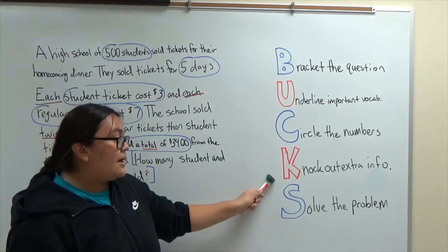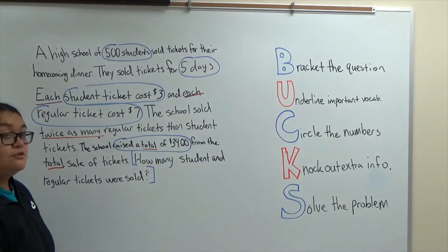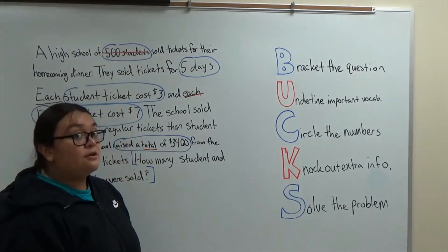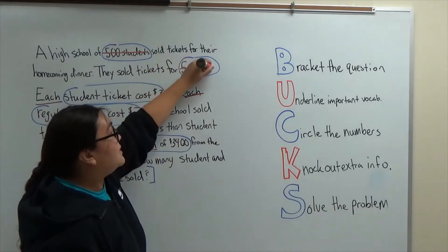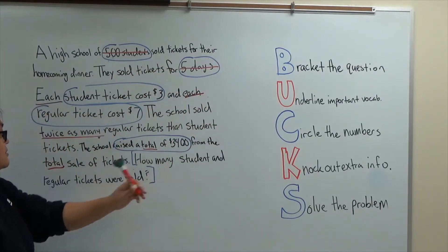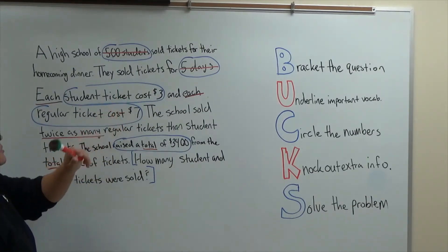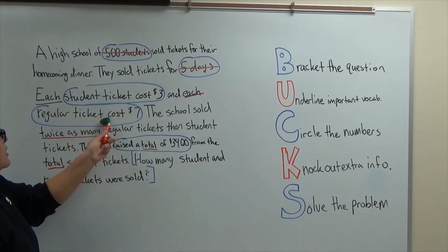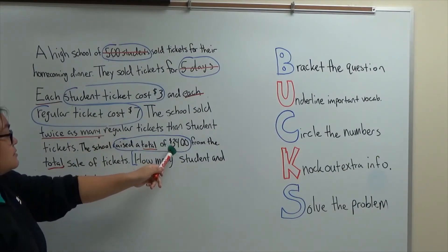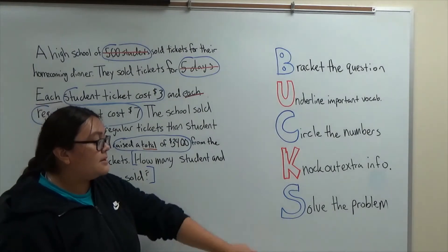Next we have K — Knockout Extra Info. I don't really need to know the total number of students in the school, nor do I need to know that they sold tickets for five days. All I need to know is the number of student and regular tickets. So I know my student tickets cost three, the regular tickets cost seven, and they raised a total of three thousand four hundred dollars. And so all that's left is for me to solve.